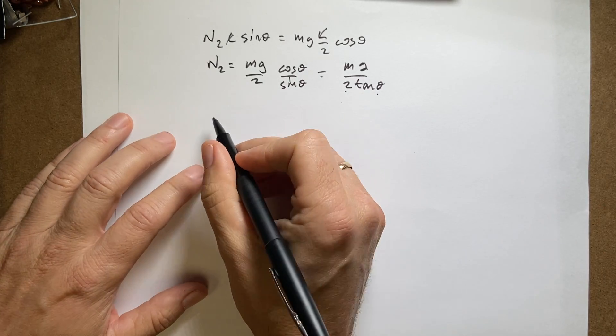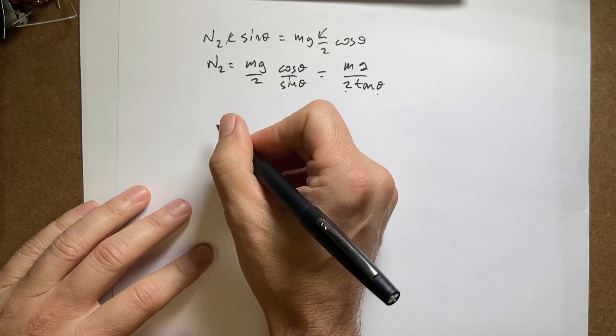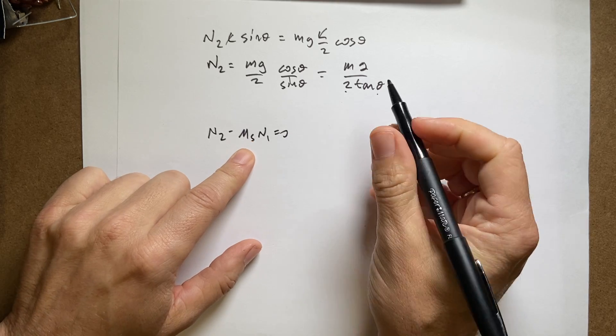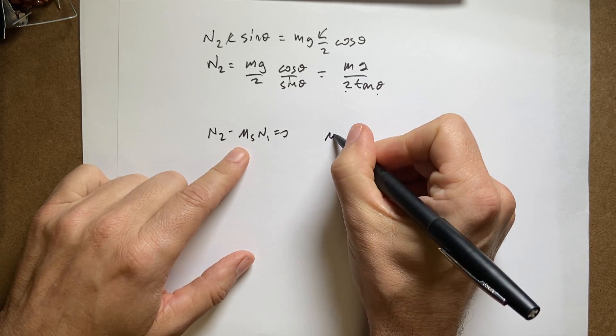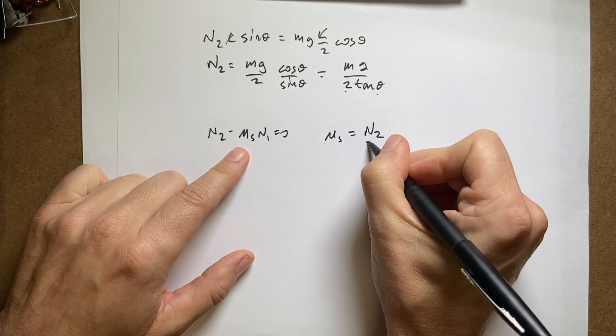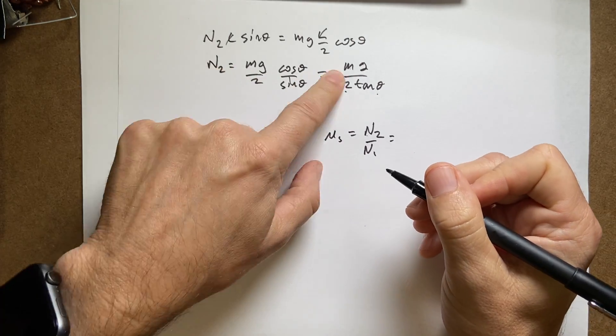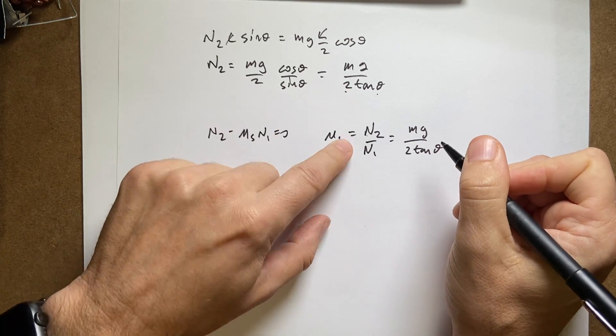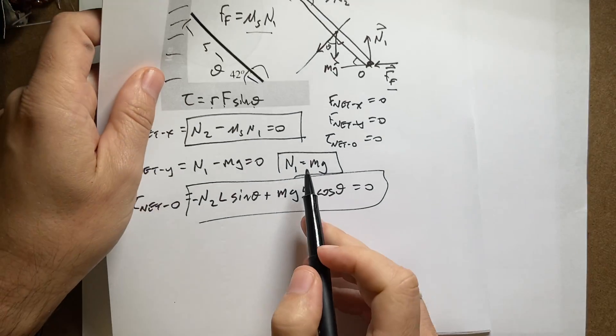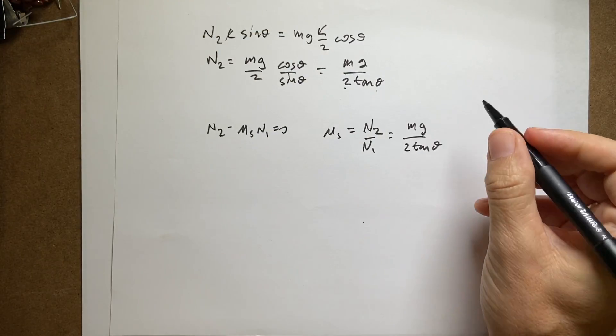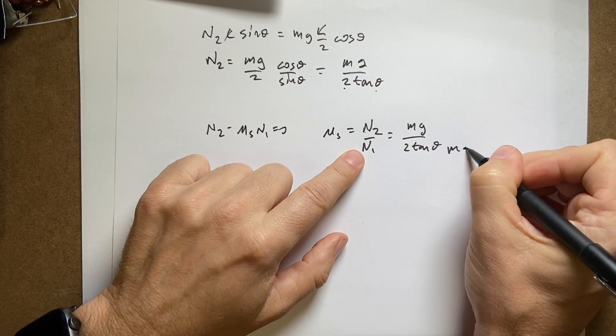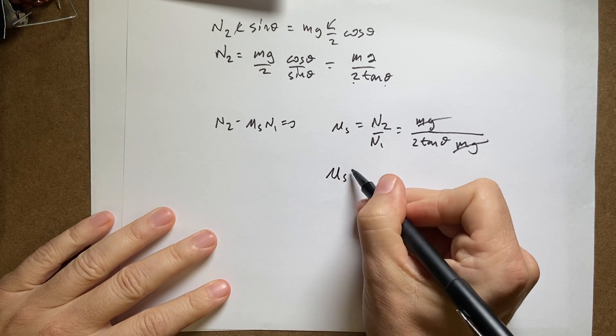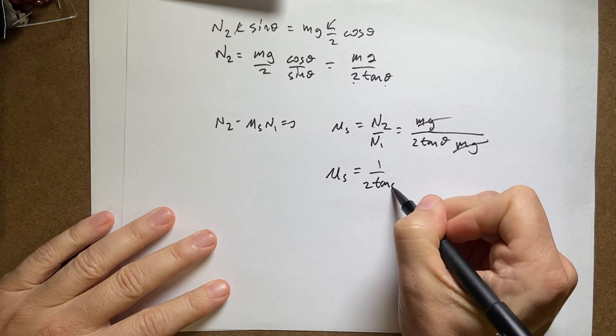So let's go back up and put everything into the first equation. So I had this N2 minus mu S N1 equals zero. So I'm going to solve this for mu S. So mu S equals N2 over N1. So I'm going to put this in for N2, mg over 2 tangent theta. And then N1, I'm going to put in mg. So I get mg cancels.